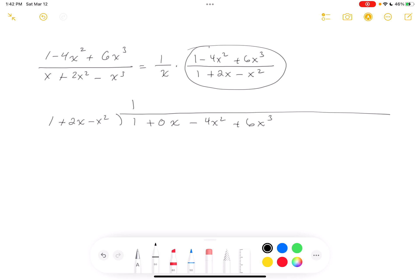So it's 1. What do you get? 1 plus 2x minus x squared. Relatively simple numbers. Should be easy to subtract. Minus 2x. And this is going to be minus 3x squared plus 6x cubed.